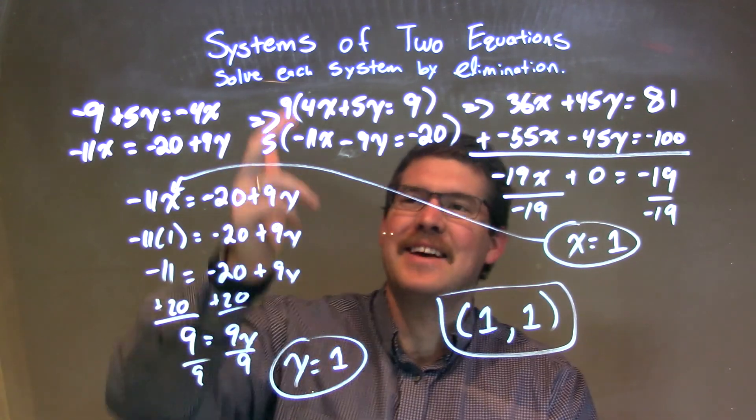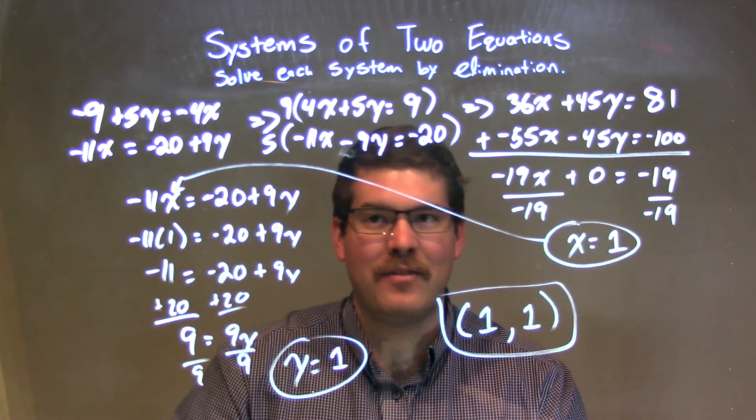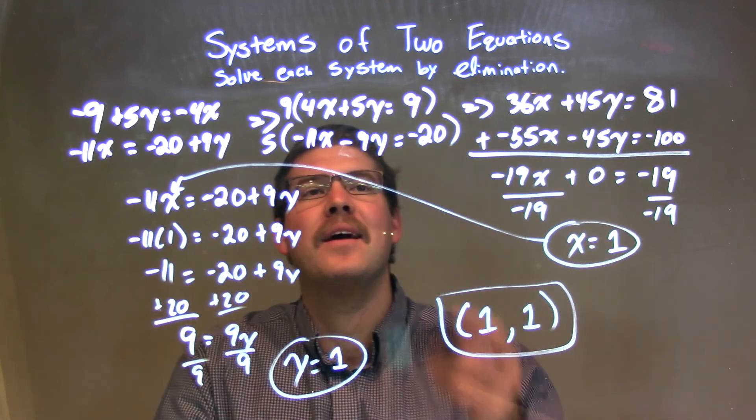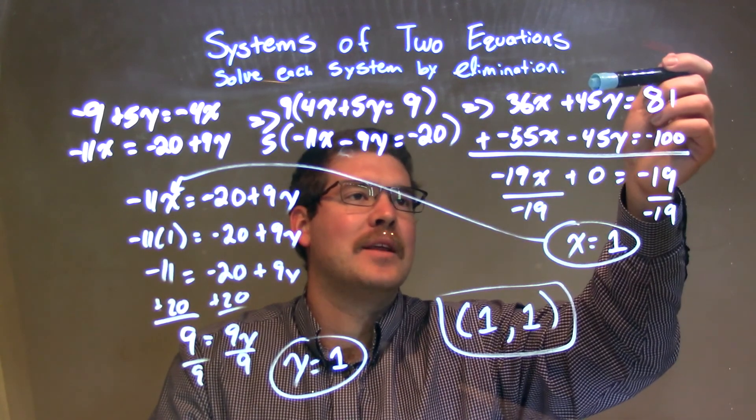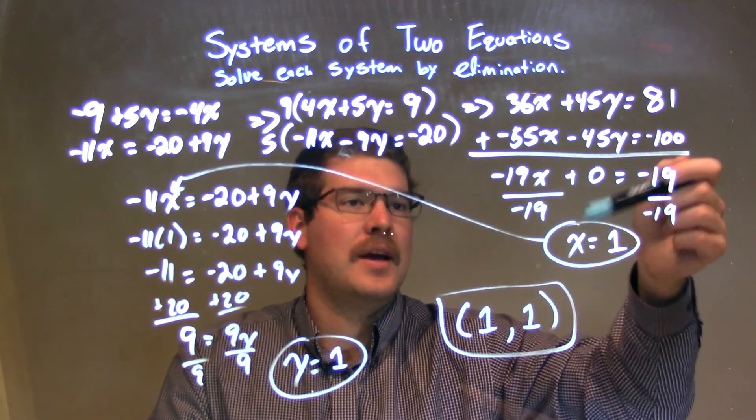I multiplied the top equation by 9, bottom equation by 5. And what that would do is help me eliminate the y variable.